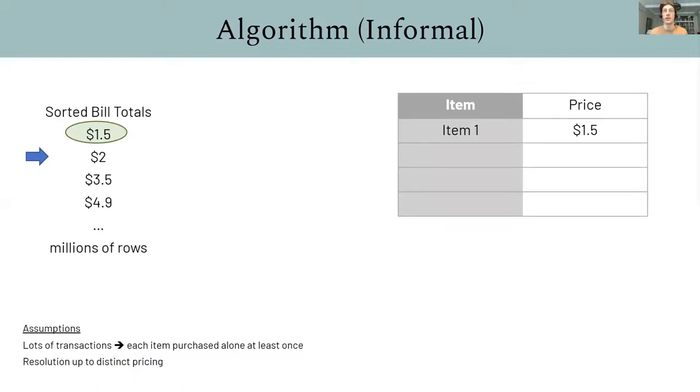Is it close to the price of purchasing item one more than once, like $3 or $4.50, et cetera? It's not. So, we add $2 as a new distinct product to the menu. Continuing $3.50, we approximate this as a combination of items on the inferred menu. And $4.9, we can also approximate as a combination of items on the inferred menu. So, this is the intuition behind our algorithm.